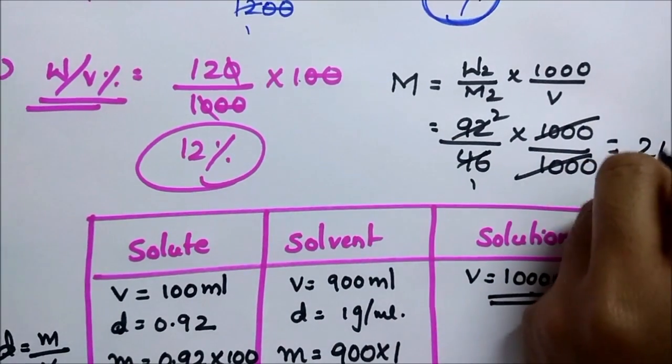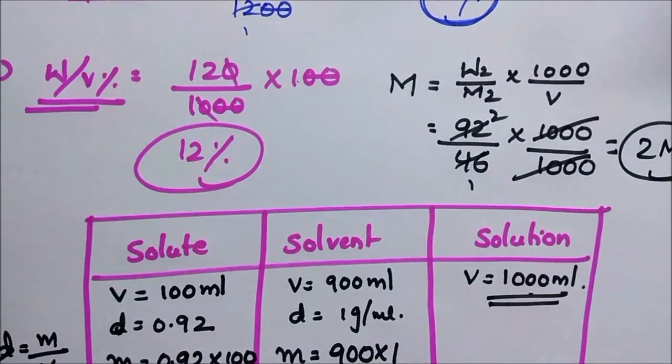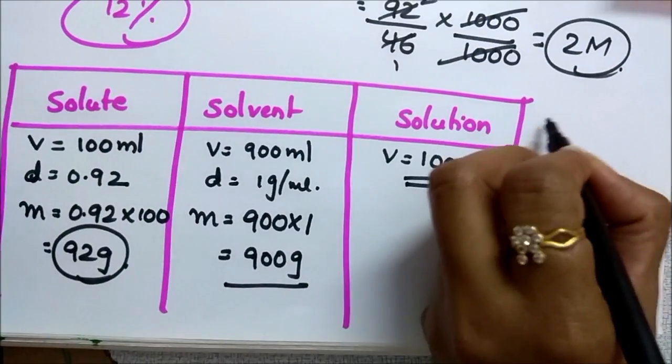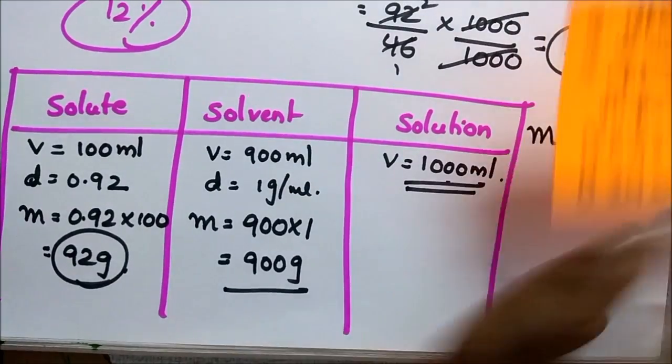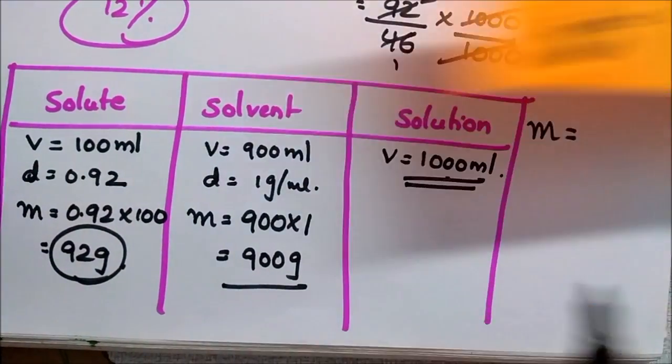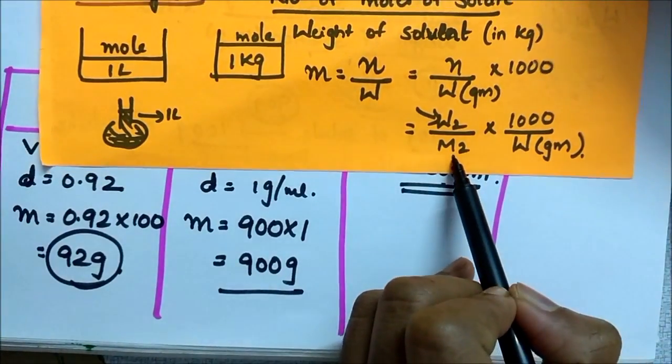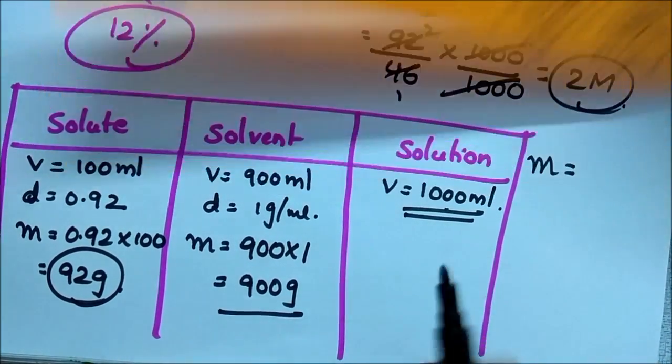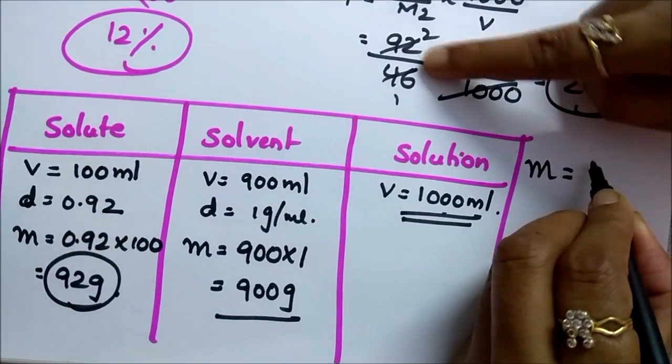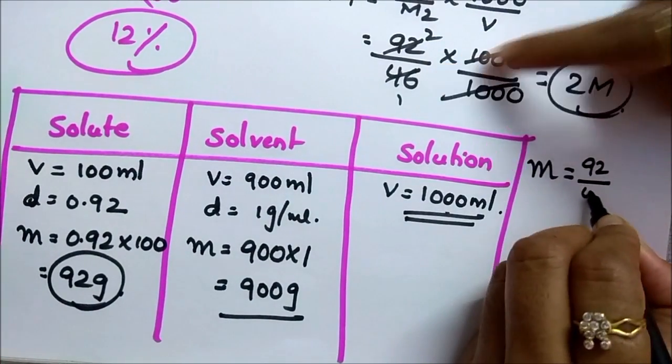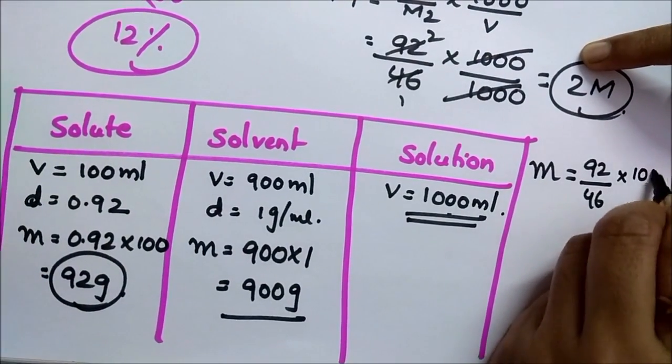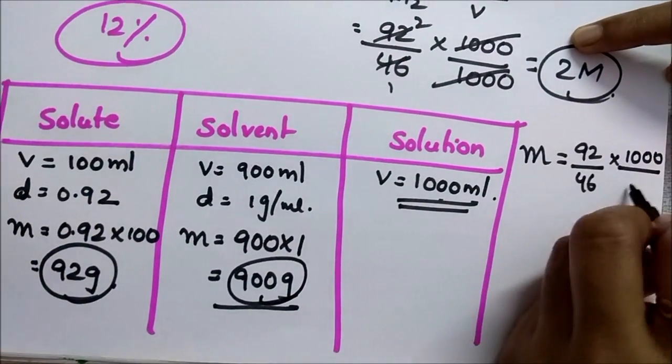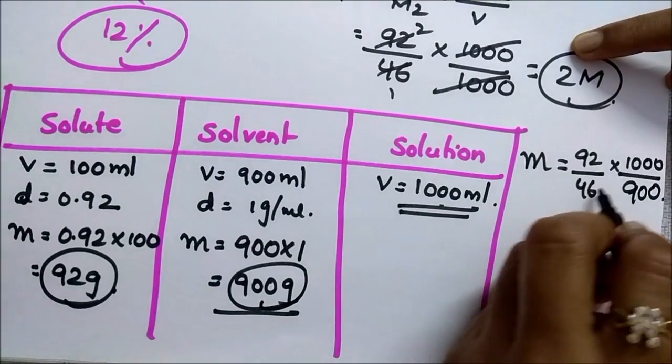Next part, you have to calculate molality. Molality equal to what is the formula? Weight of solute by molecular weight of solute into 1000 by weight of solvent in grams. So w2 is same 92 by 46 into 1000 by weight of solvent 900. Then we get 2000 by 900, 20 by 9.